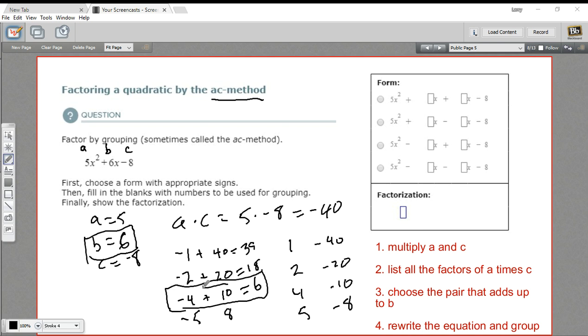So these two numbers are important numbers. And the next step is to rewrite this equation in a slightly different way. So instead of 6X, we want to rewrite this as negative 4X plus 10X.